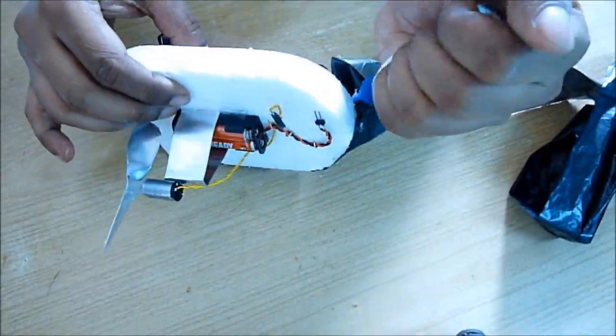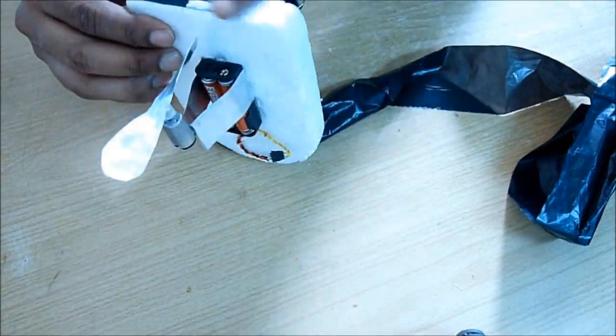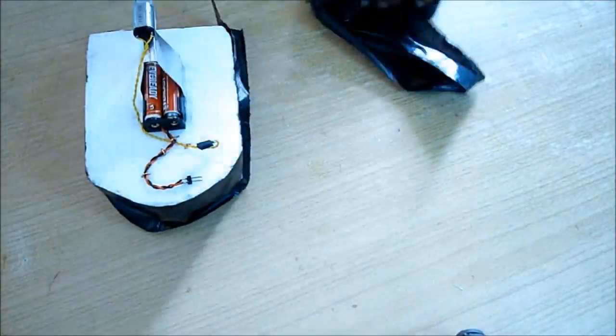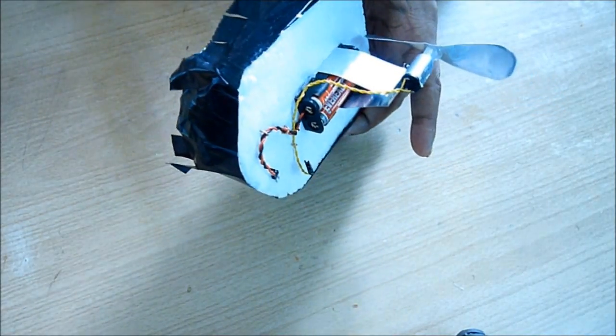From a garbage bag, take a plastic tape like this. Black color is useful. Glue that around the thermocol like this and give it a small cut. This way it looks like a hovercraft and the wheels are not visible.